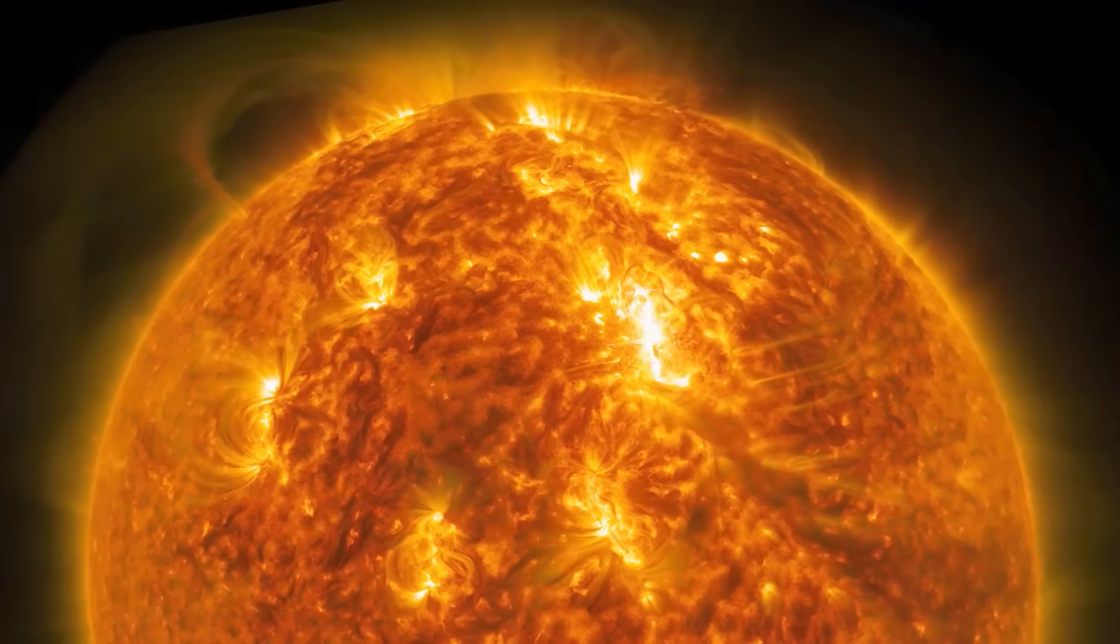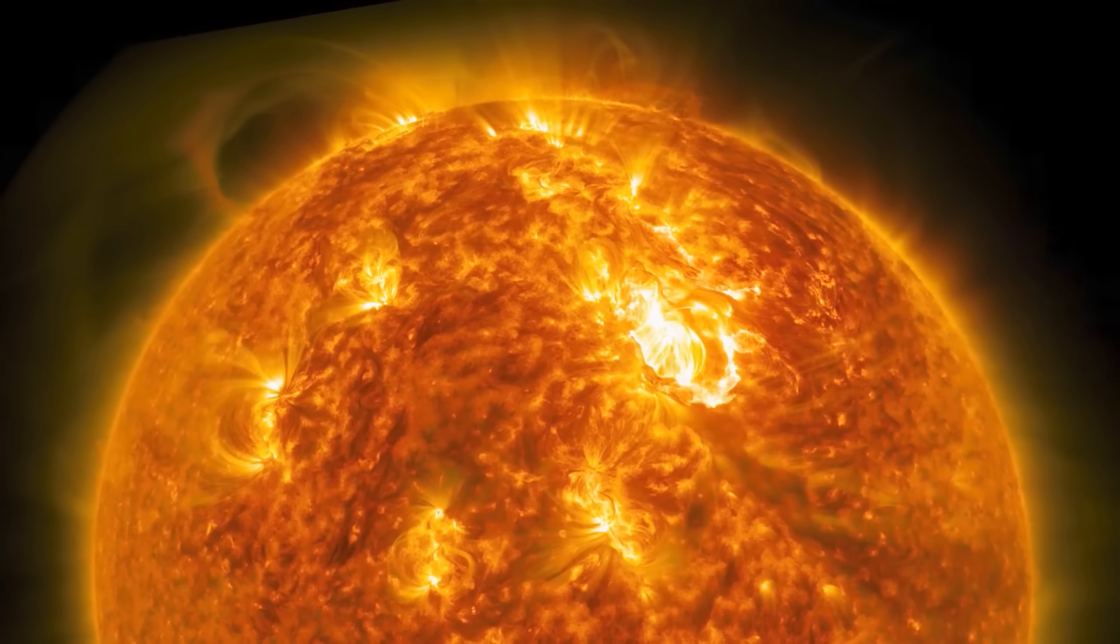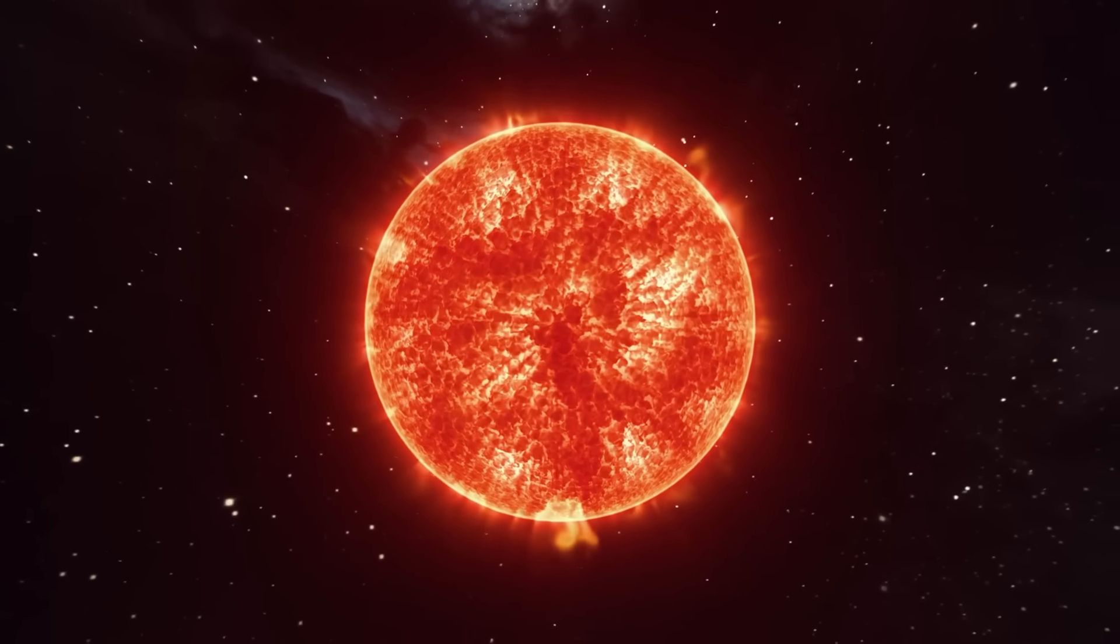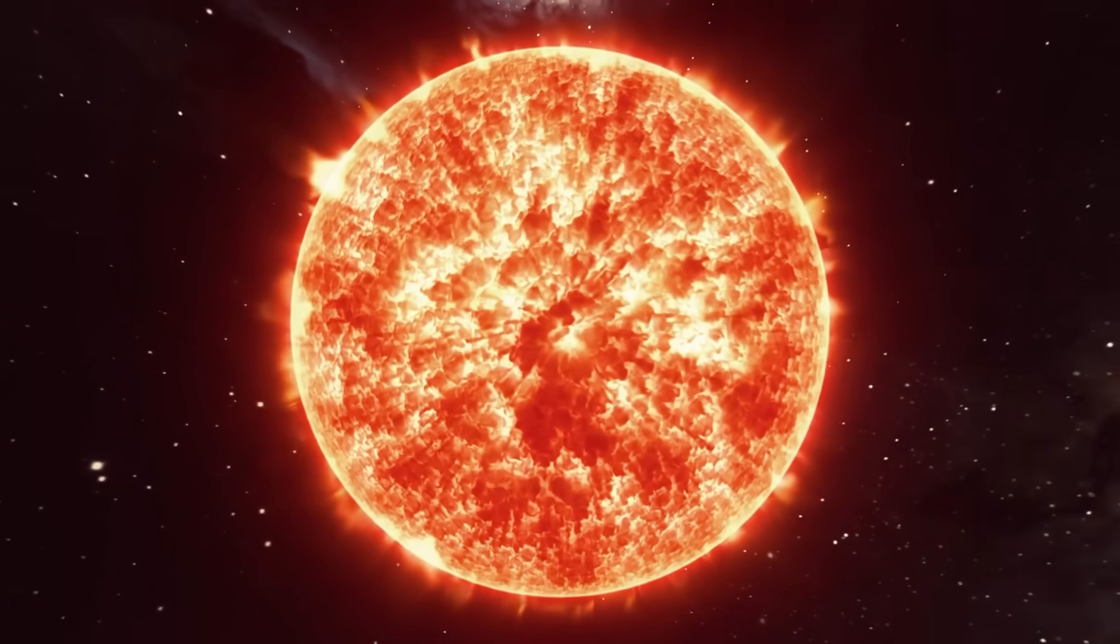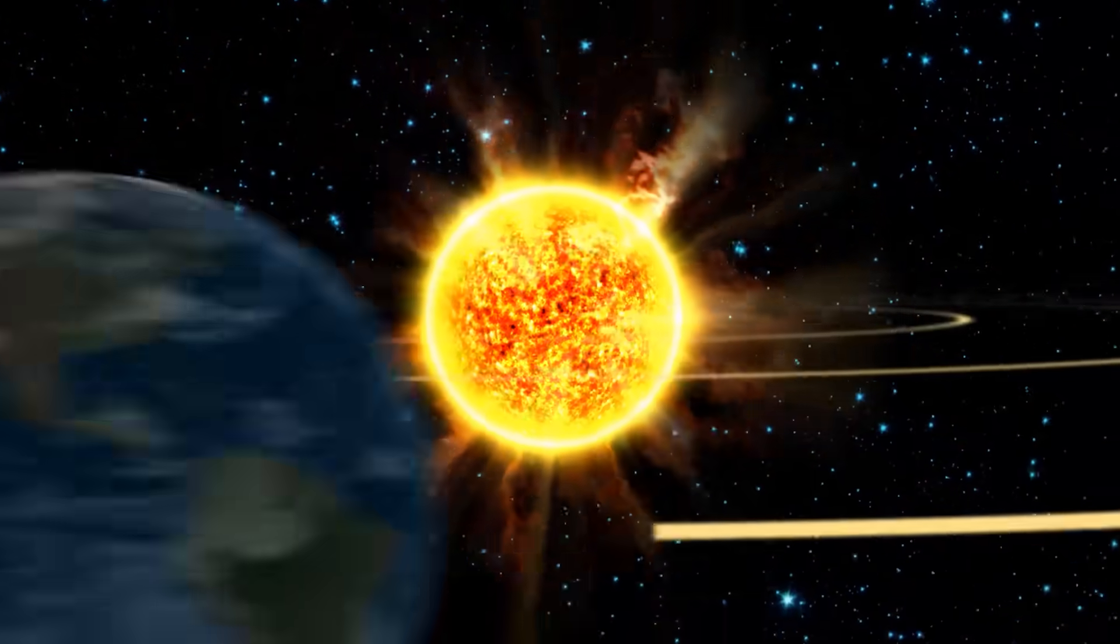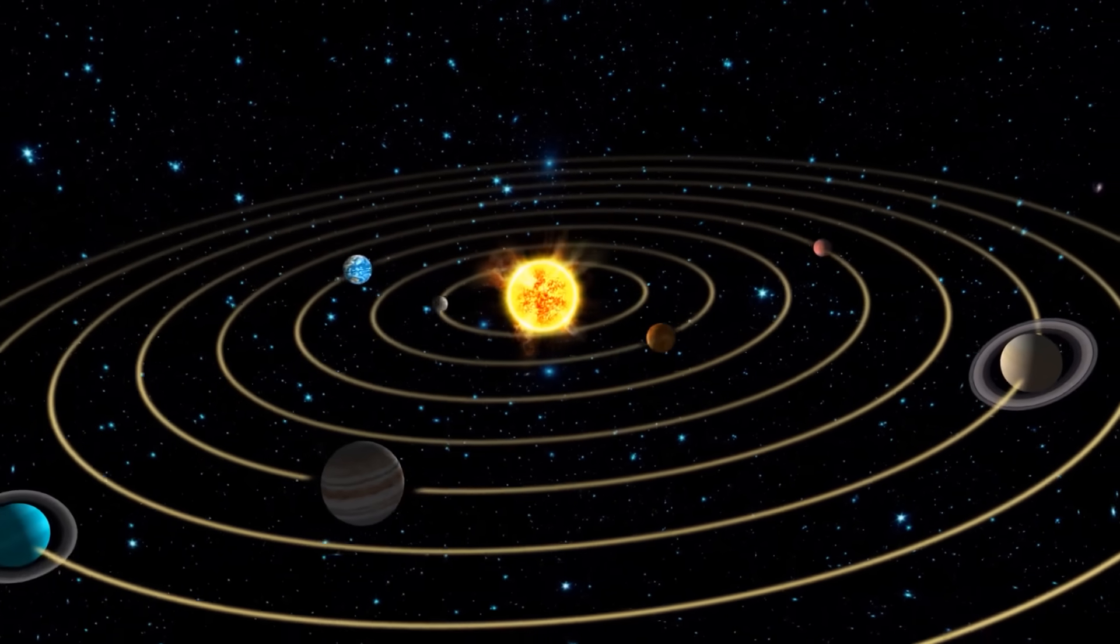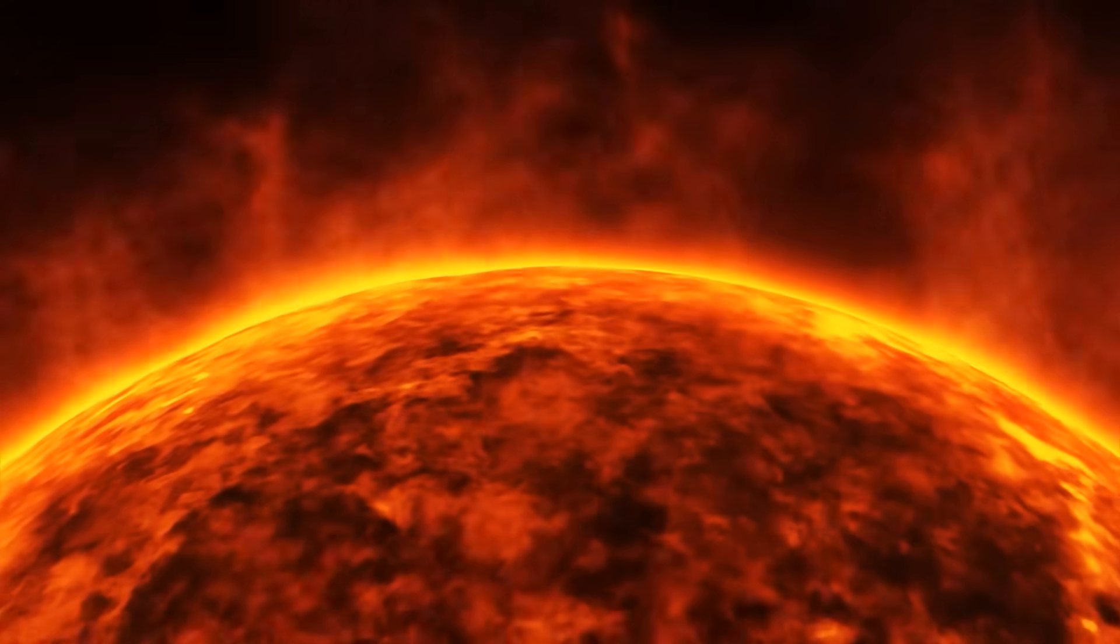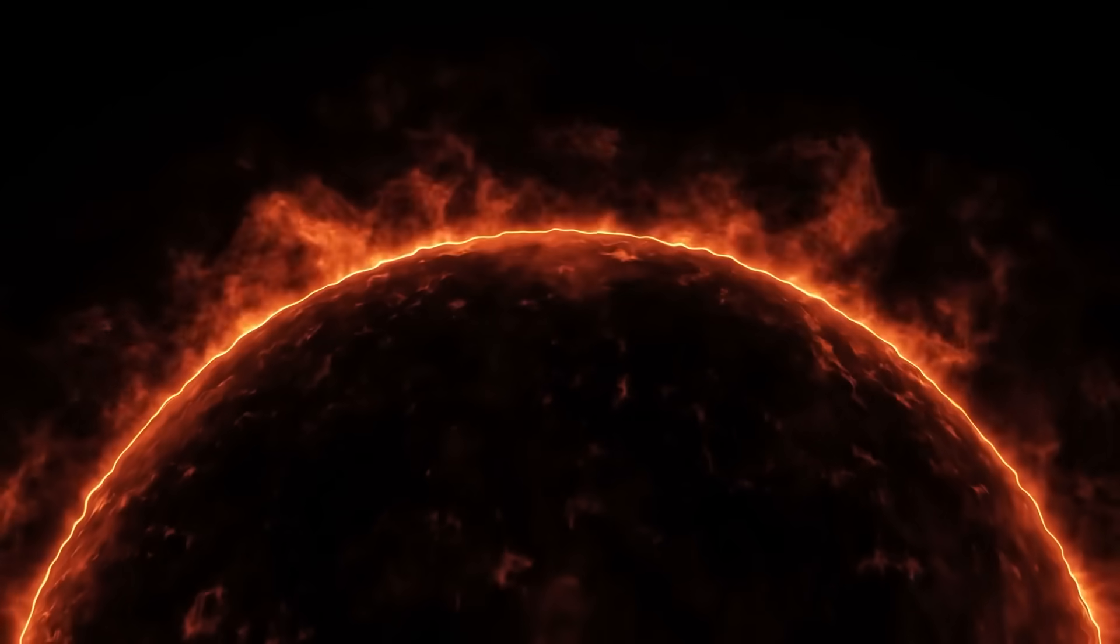The outermost layer of the bubble the sun creates around itself with its winds is known as the heliopause. Solar winds and particle streams are the constant streams of plasma from the sun that flow across the entire solar system. The heliosphere, a protective ball created by these currents, envelops the sun and its planets. The magnetic field of the sun and solar wind particles continue to dominate the heliopause, the outermost layer of this protective sphere.